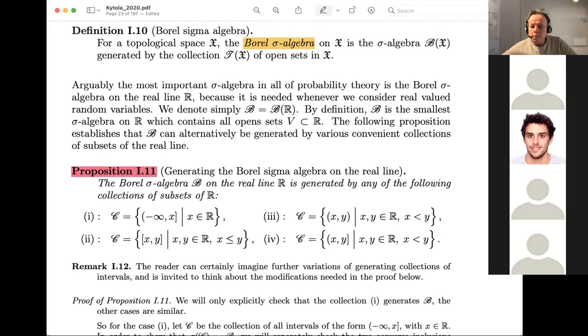We take it as the sigma algebra defined by all open sets, so we say that the Borel of X is equal to sigma C, where C is the open sets.